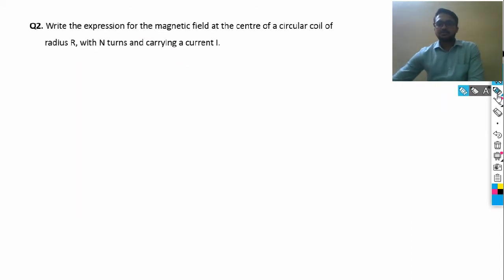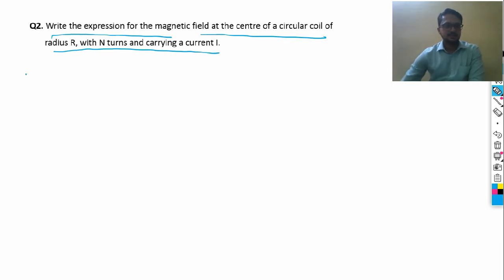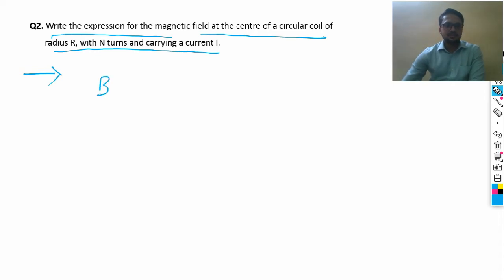The second question asks: write the expression for the magnetic field at the center of a circular coil of radius r, number of turns n, and current I. The formula is B = μ₀nI / 2r.